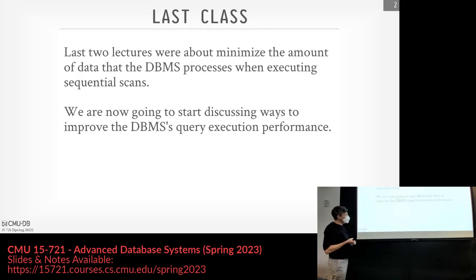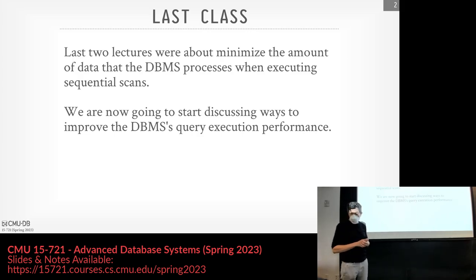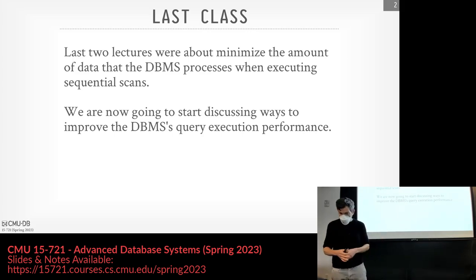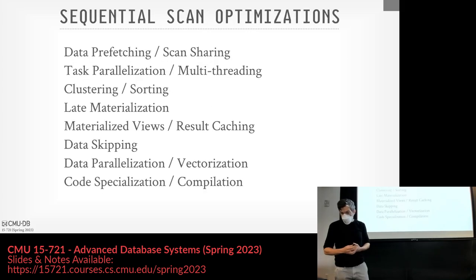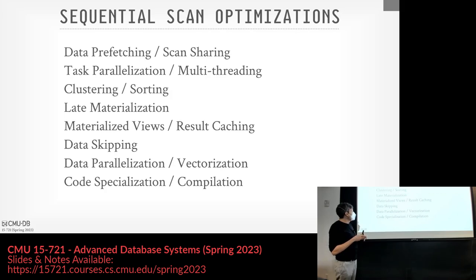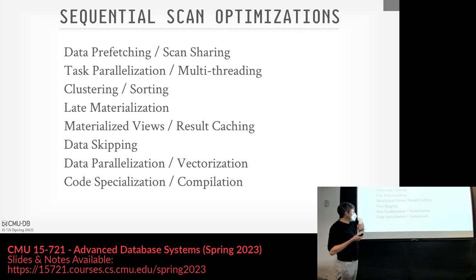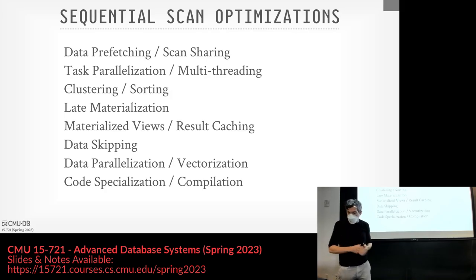So going forward for the next couple weeks, we're going to talk about how we actually start executing queries, and the ways we're going to be able to improve performance based on taking advantage of modern CPU architectures and modern algorithms. I shared this list before, but these are a bunch of different techniques we can do to speed up sequential scans. Data skipping was the technique for identifying what you don't need, and now I'm going to go through a bunch of these ones for the next couple classes and build our system to take advantage of these methods.